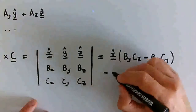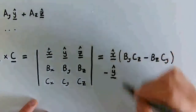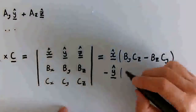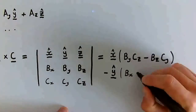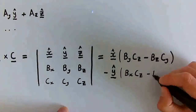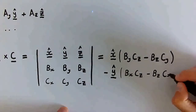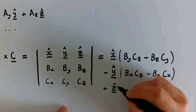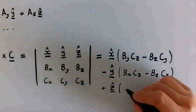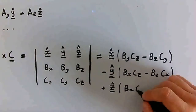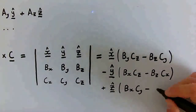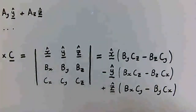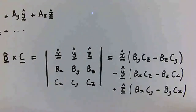We always have a minus sign before the second basis vector. Inside the brackets we have Bx·Cz minus Bx·Cx for the y-hat component. And then a plus z-hat times (Bx·Cy minus By·Cx). So there's the cross product of B and C.